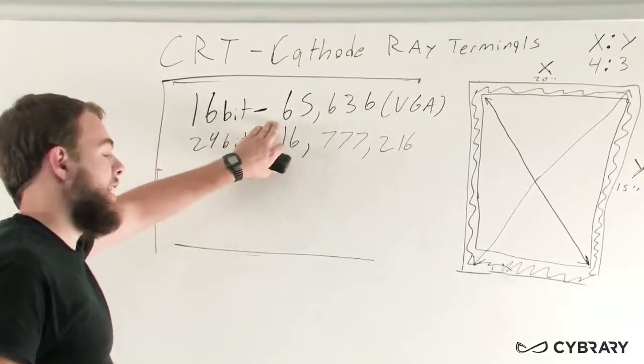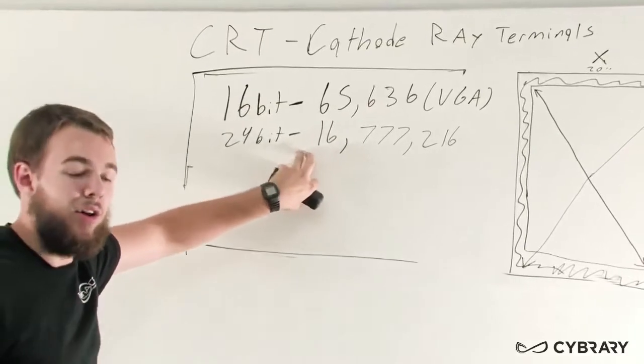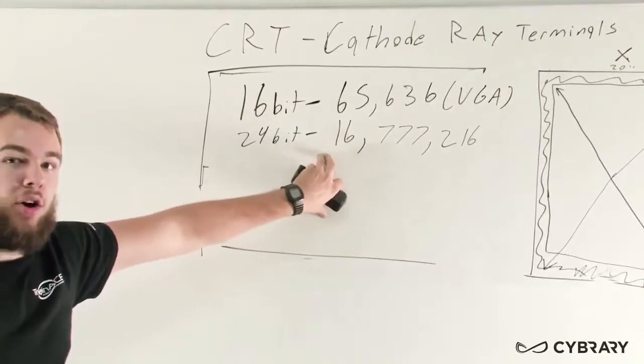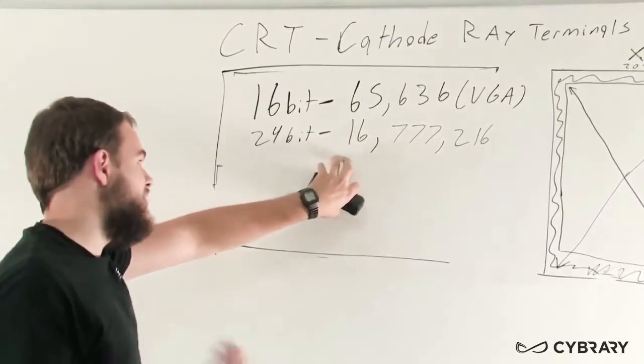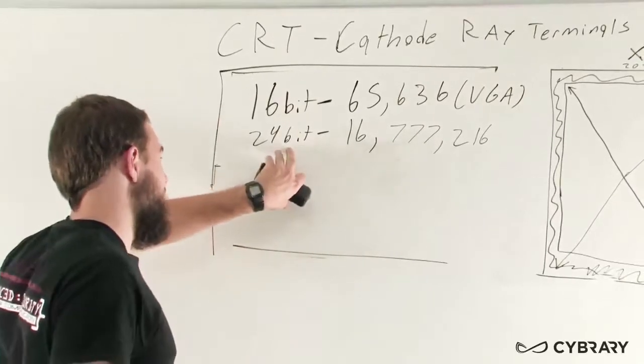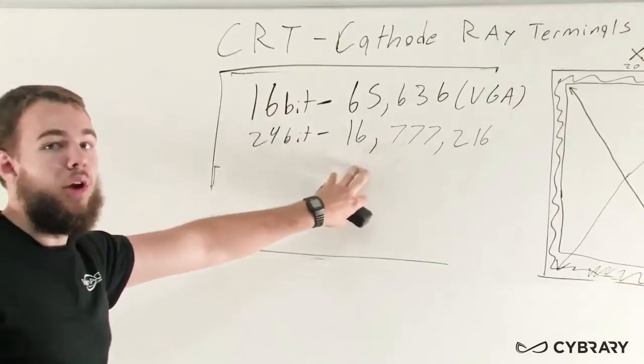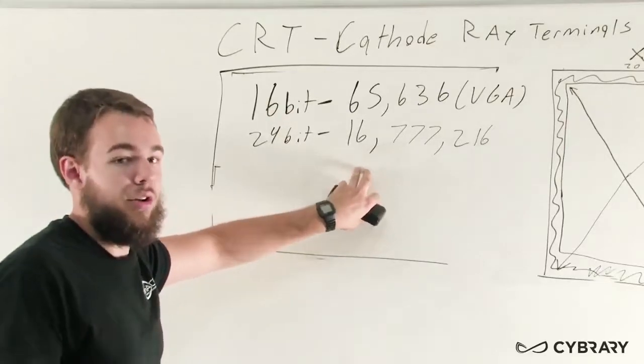Many, many times more than that 65,000, we're actually in the millions of colors that we can display on our pixels. This SVGA display is what displays this 24-bit. And this is also known as true color, a true color display.